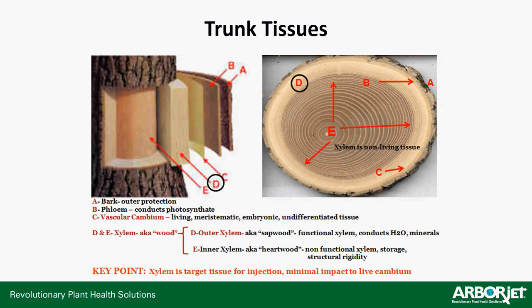Moving into trunk tissues: starting from the outside you have your bark layer for protection, then your phloem, which conducts photosynthate — the sugars the leaf tissue created through the Calvin and Krebs cycle — sending those sugars back down to the roots for storage and use in root development. Next layer in is your vascular cambium — living meristematic cells that are undifferentiated, still figuring out whether they'll become phloem or xylem tissue.